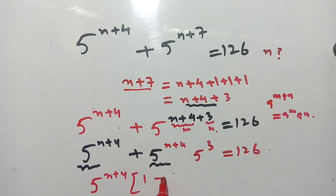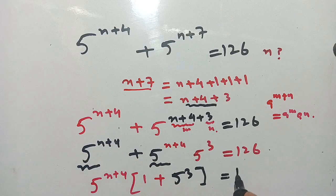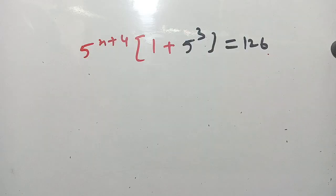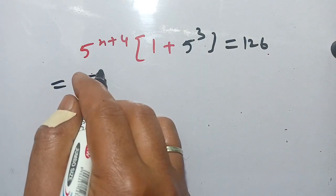and here remaining is 1, plus here remaining only 5 power 3 as 5 power n+4 goes out, is equal to 126.